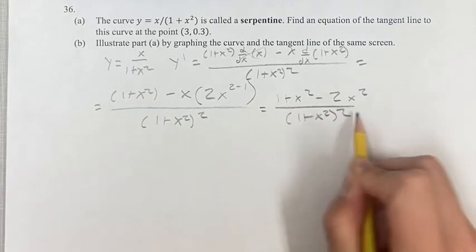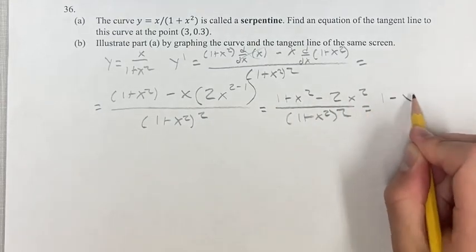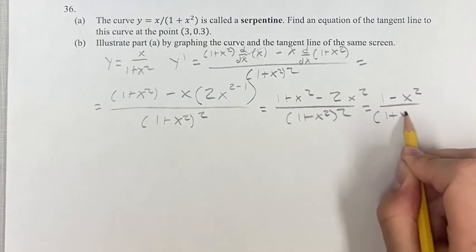Over 1 plus x squared, squared. Simplifying like terms, we get 1 minus x squared over 1 plus x squared, squared.